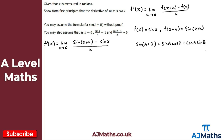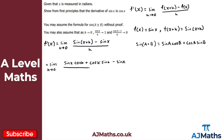Putting that together, the limit as h tends to zero becomes: sin(x + h) expands to sin x cos h plus cos x sin h, and we then subtract sin x — all over h.